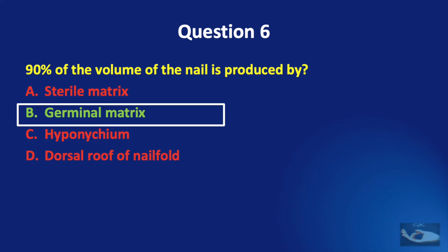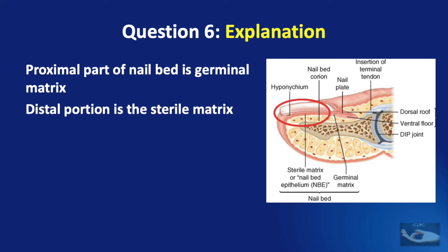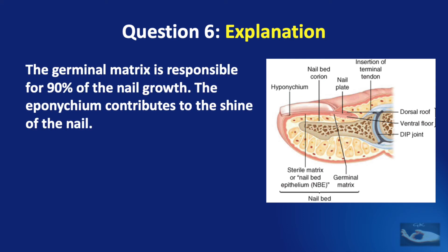The correct answer is the germinal matrix. The proximal part of the nail bed is the germinal matrix, and the distal portion is known as the sterile matrix. The germinal matrix is responsible for 90% of nail growth. The eponychium contributes to the shine of the nail; this eponychium is the part of the matrix on the dorsal roof of the nail fold.